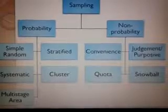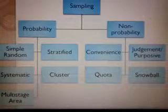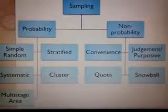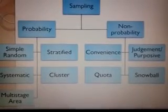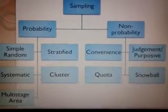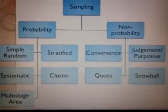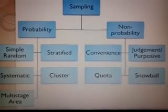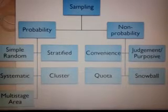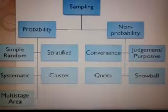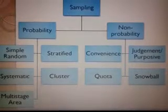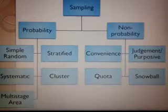Hey students, in our last lectures of business research methods, we have discussed about sampling. We have also discussed about error in business research and how to reduce error in research. In sampling, we have discussed that broadly the sampling techniques can be divided into two categories: probability sampling and non-probability sampling. In this lecture, we will discuss further classes of sampling techniques.